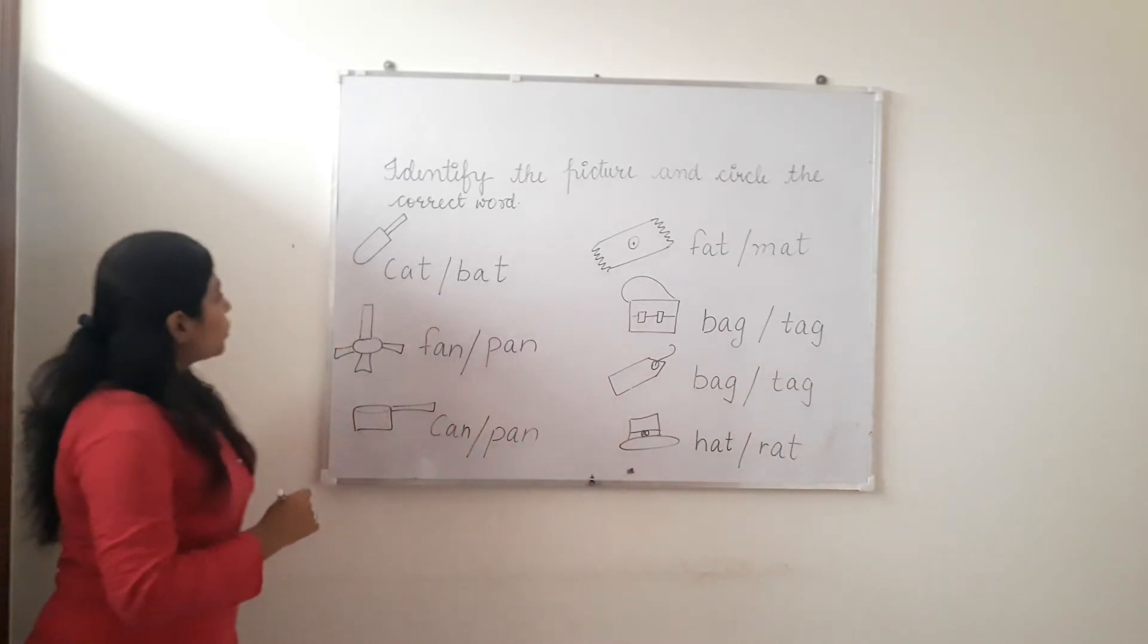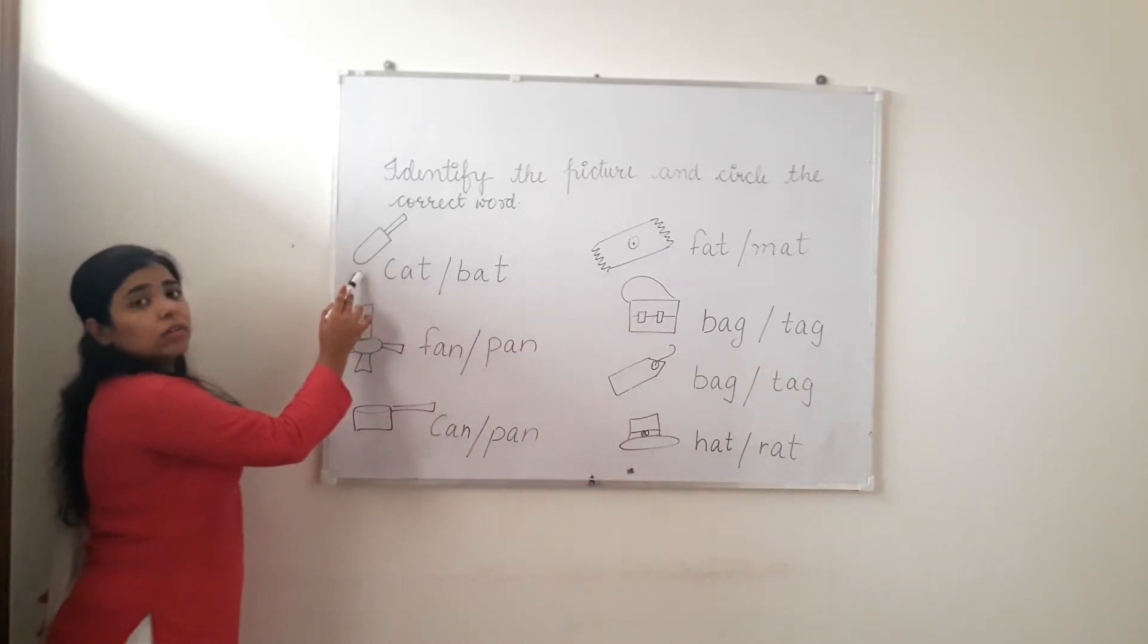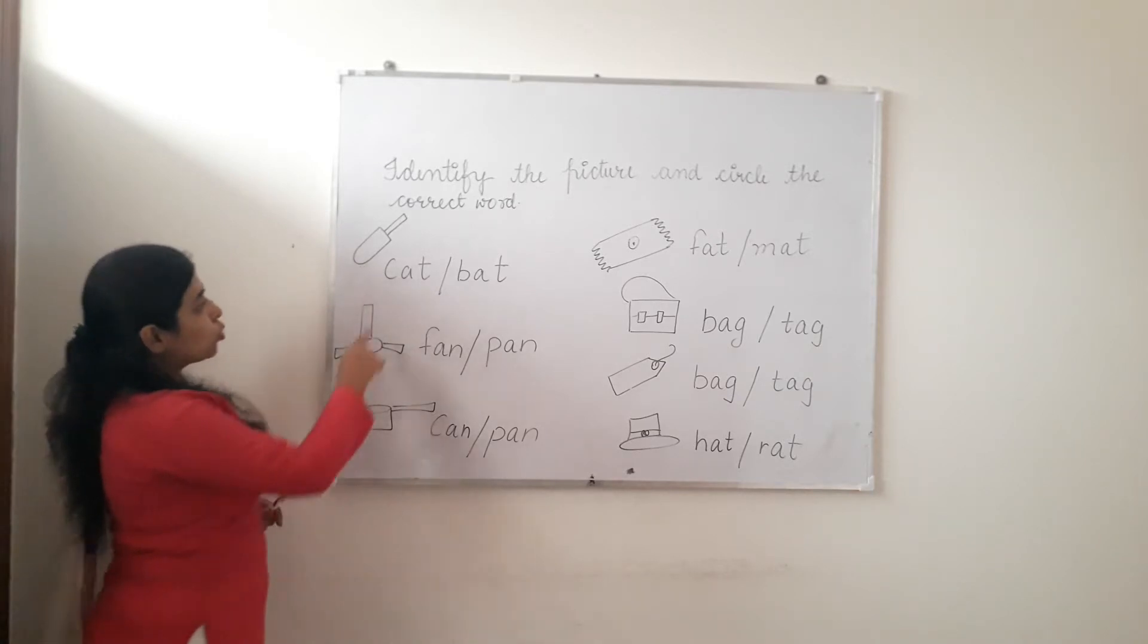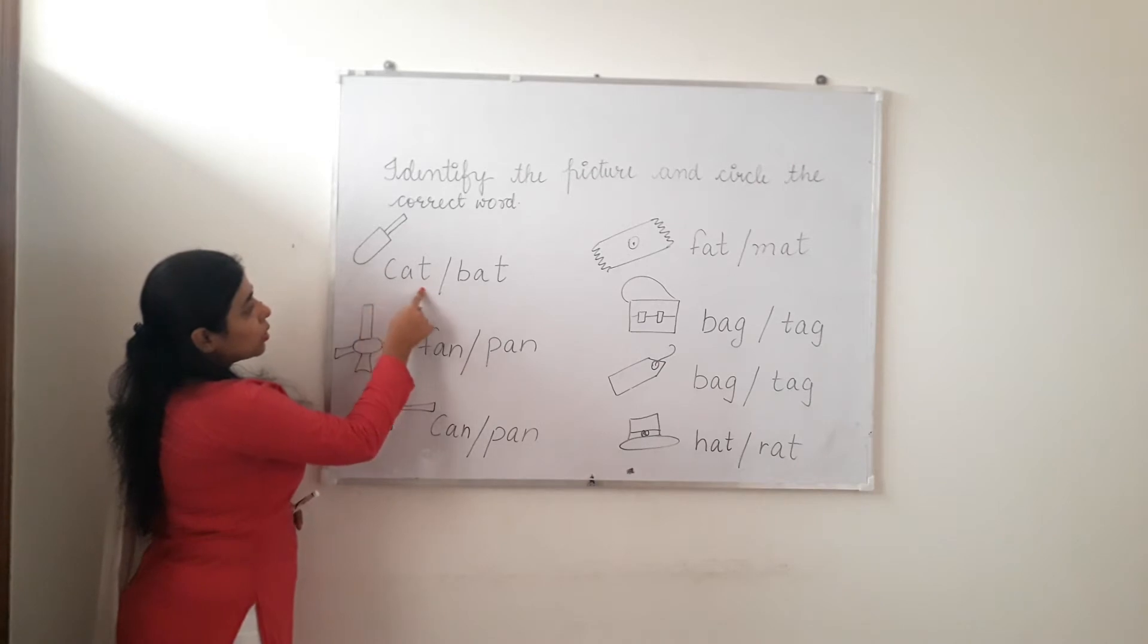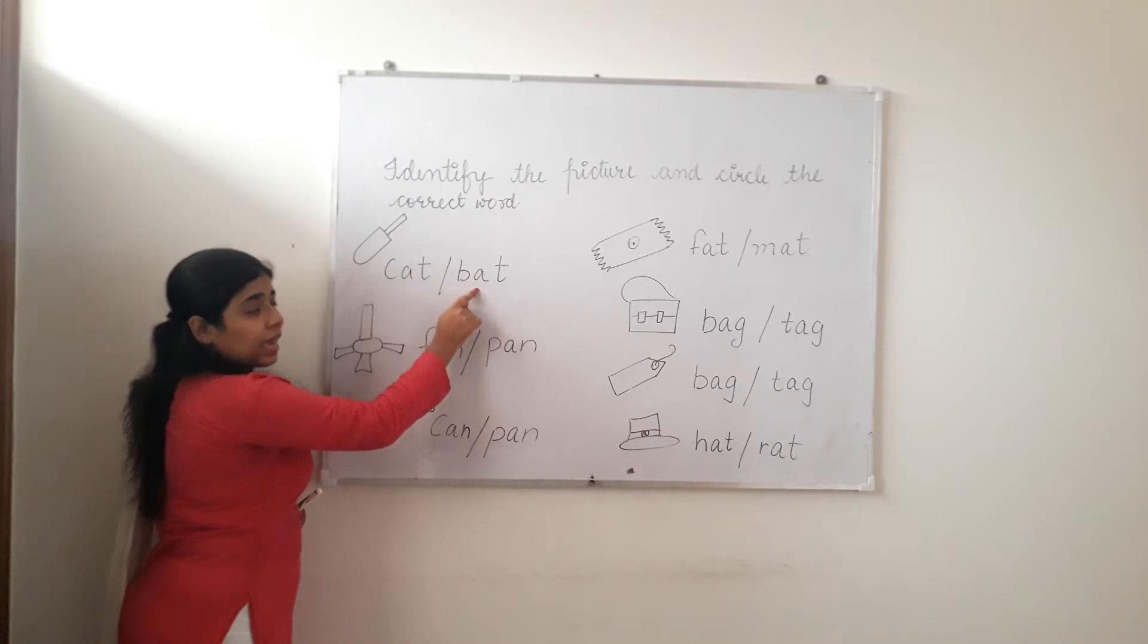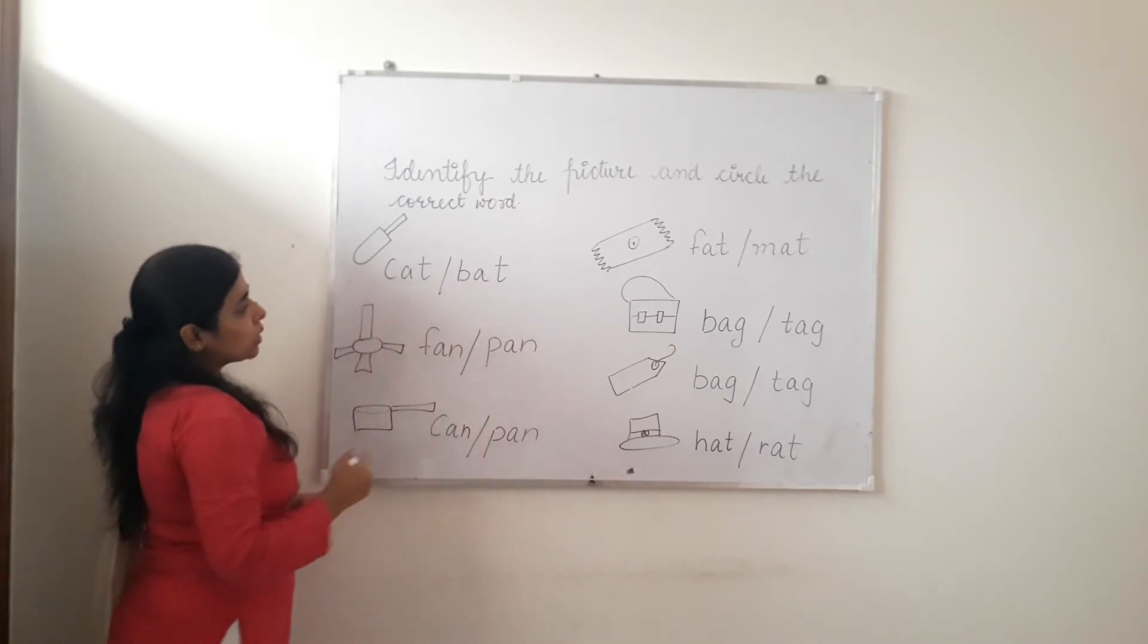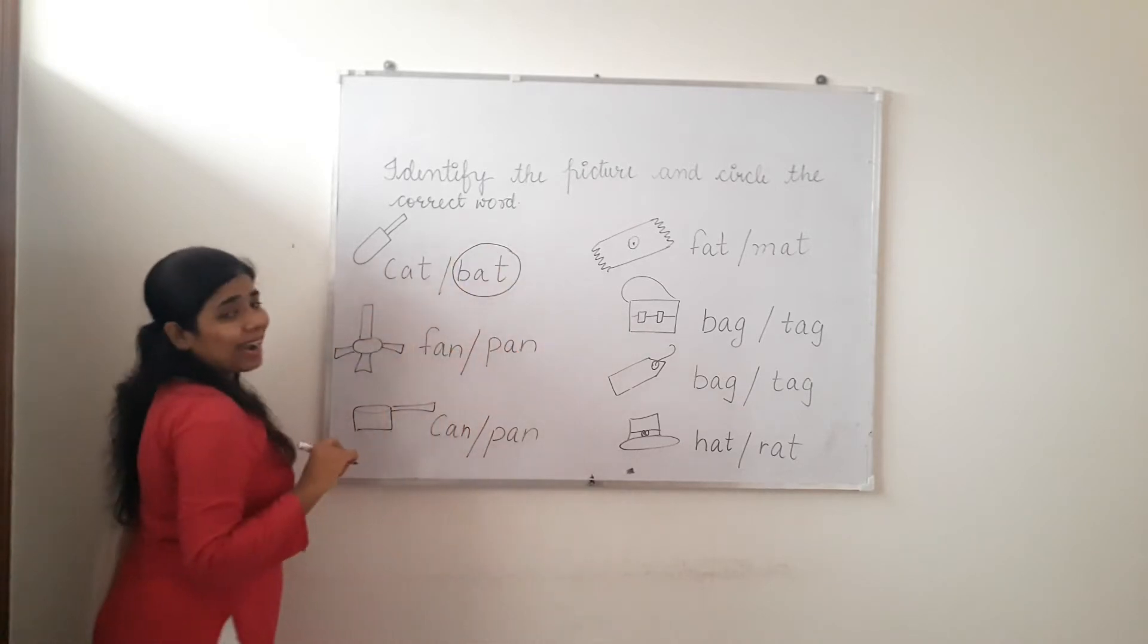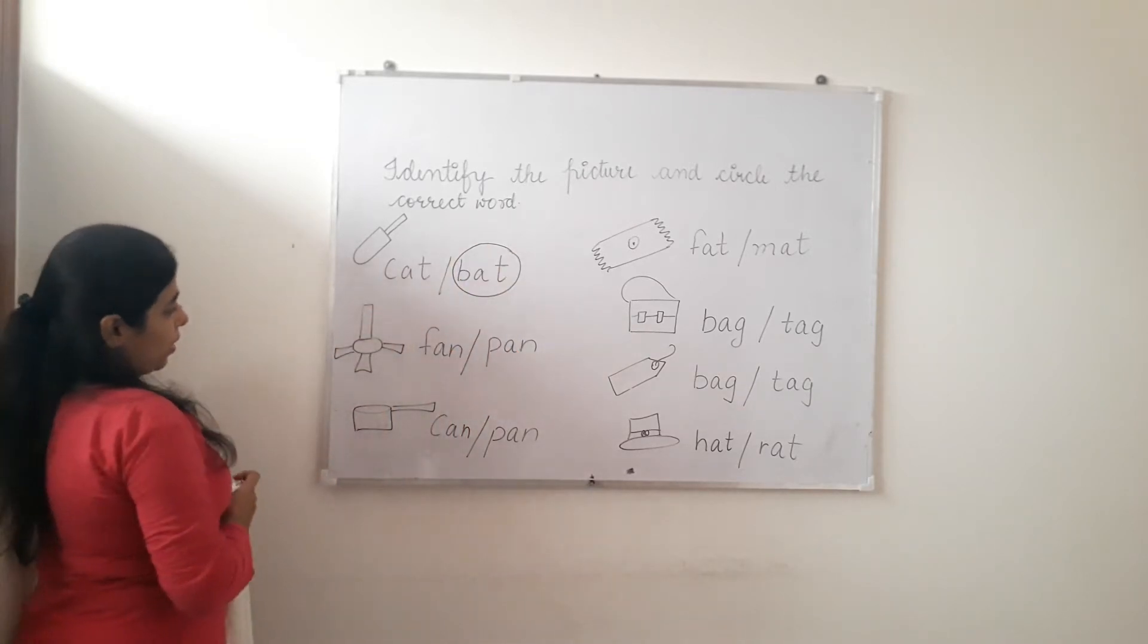So as you can see, first picture is of, tell me, bad. What is this? Bad. So is it bad? Yes, is it bad? So we will circle bad.